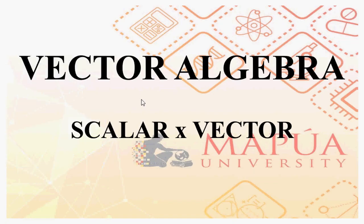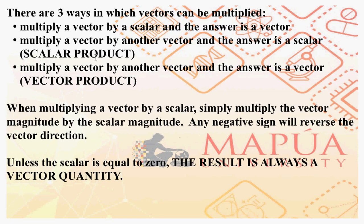Continuing with our discussion on Vector Algebra, let's take a look at Vector Multiplication. There are three ways in which we can multiply vectors. We can multiply a vector quantity by a scalar quantity and the answer will be a vector quantity. We can multiply a vector by another vector and the answer is a scalar quantity — this is referred to as scalar product.